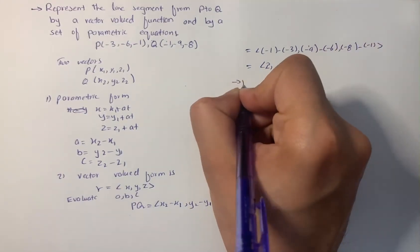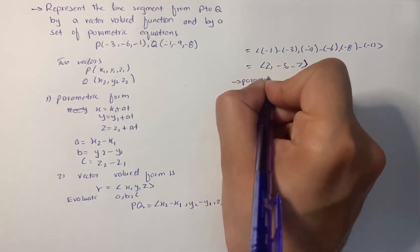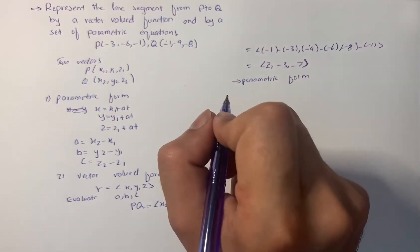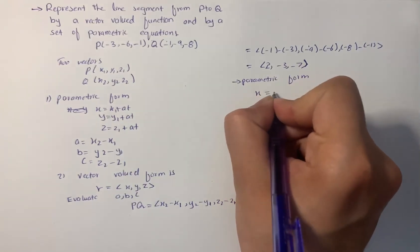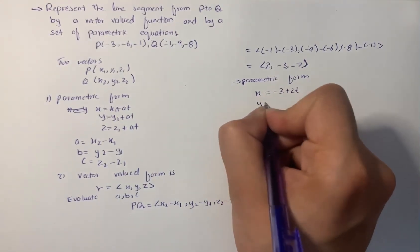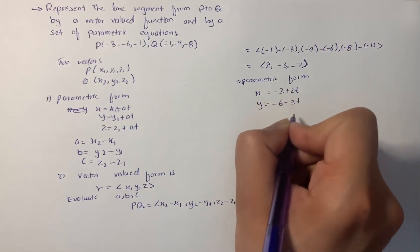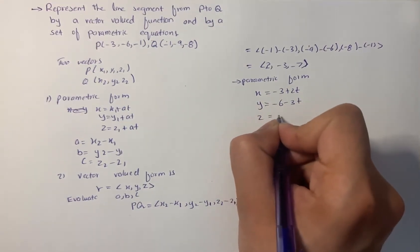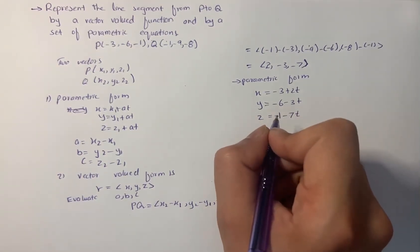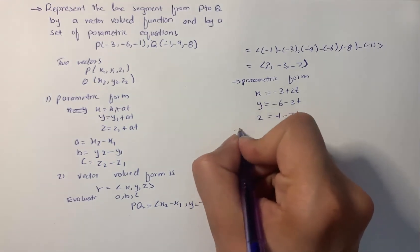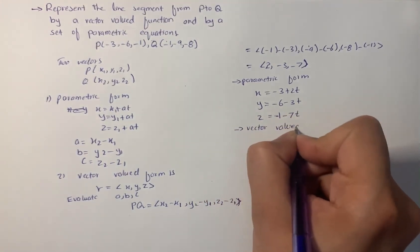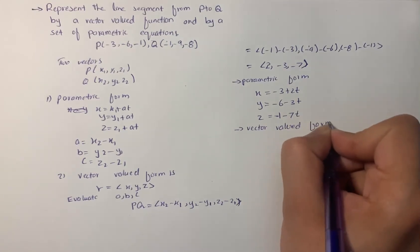The parametric form is: x = -3 + 2t, y = -6 - 3t, and z = -1 - 7t.